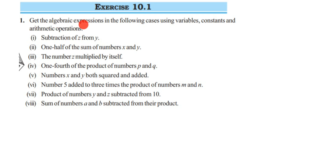The first question is: subtraction of z from y. We have to subtract z from y, so we remove z from y. The answer is y minus z — it is not z minus y, it is y minus z. Here, y and z are variables and minus is the arithmetic operation.